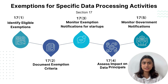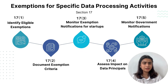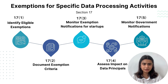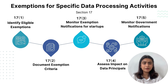Let's talk about Section 17, which covers exemptions for specific data processing activities. First, we need to identify eligible exemptions, where we review and catalog data processing activities to ascertain eligibility for exemptions under this clause, ensuring that such processing aligns with the stipulated purposes. For example, banks like HDFC and ICICI Bank identify that their processing of data for detecting and preventing financial fraud qualifies for exemptions under this clause, ensuring their fraud prevention measures are legally compliant.